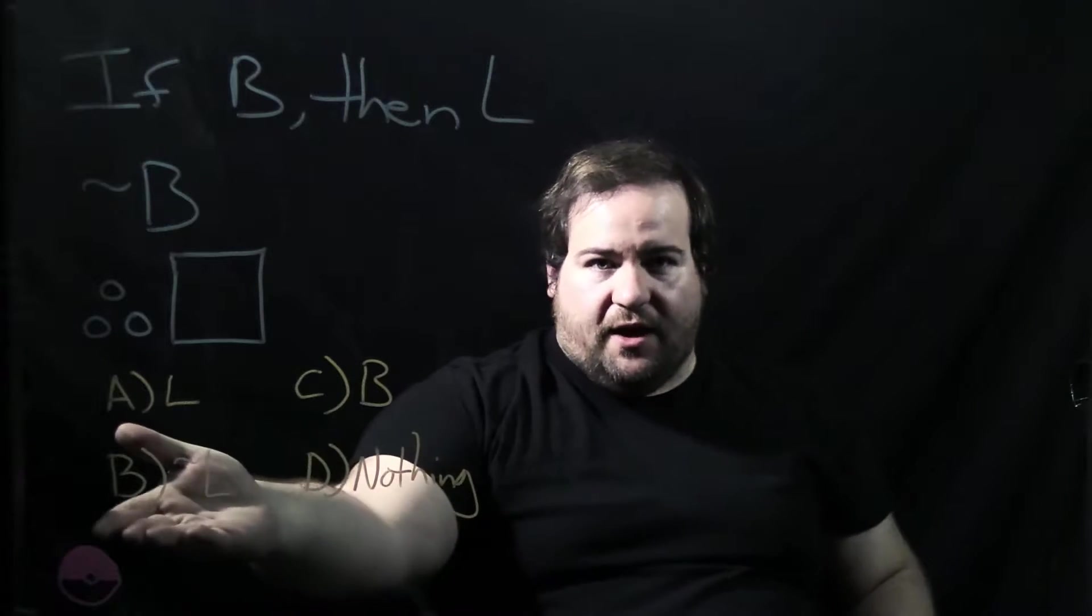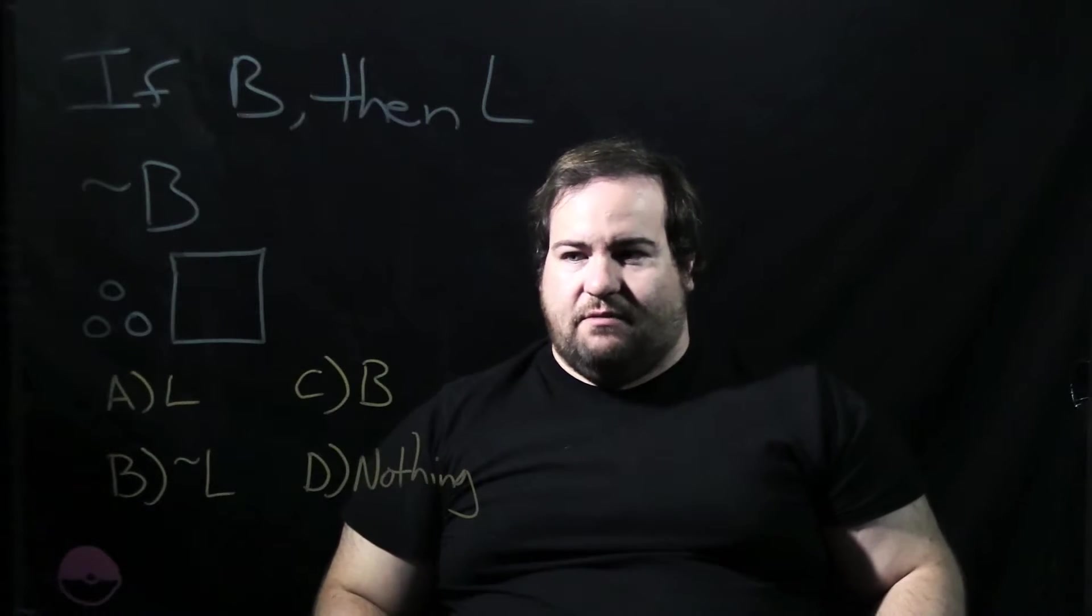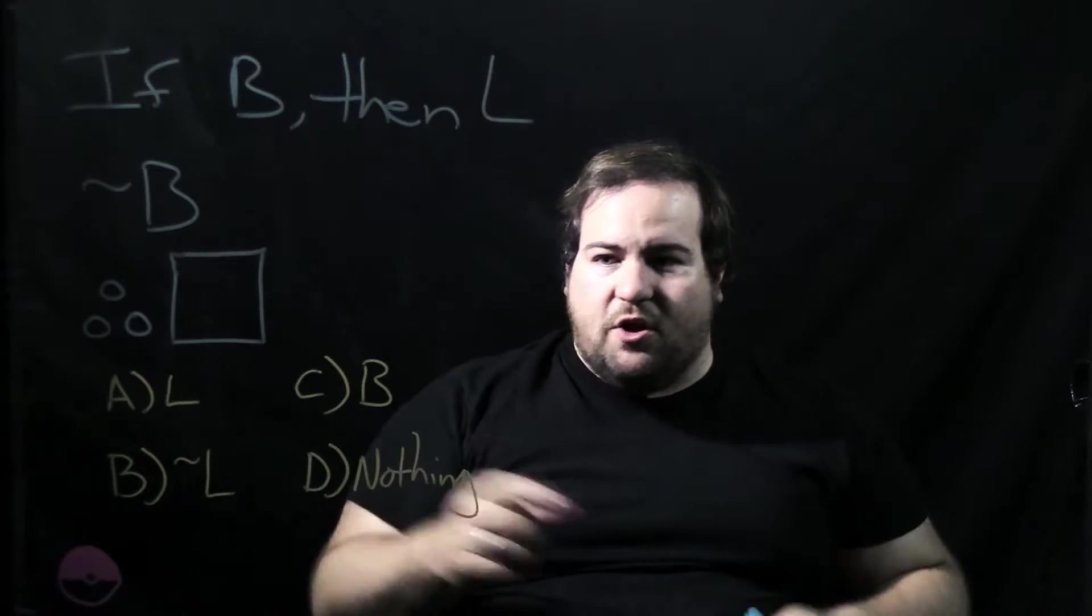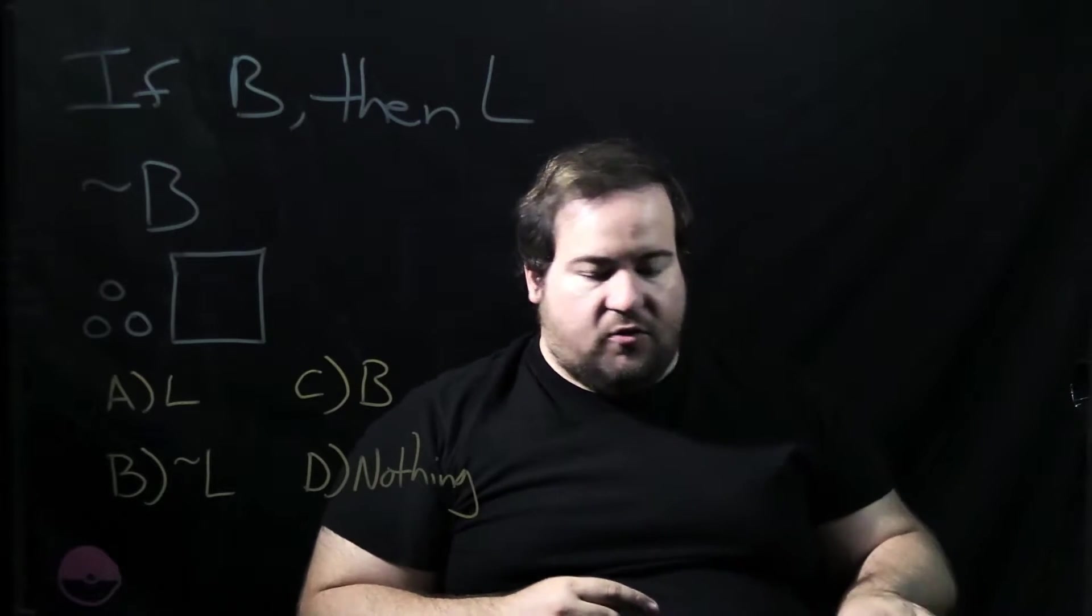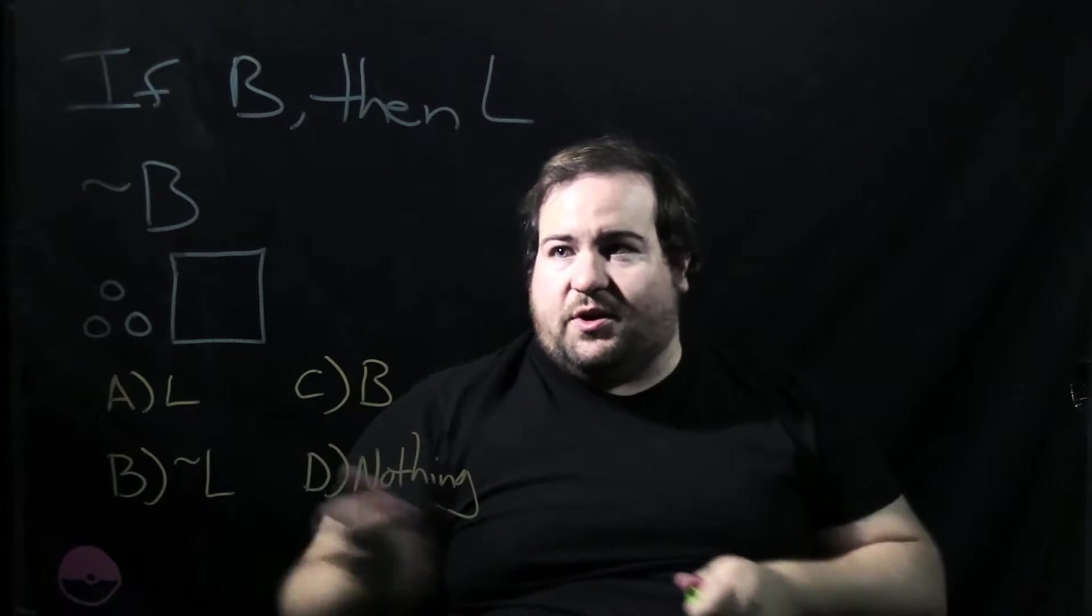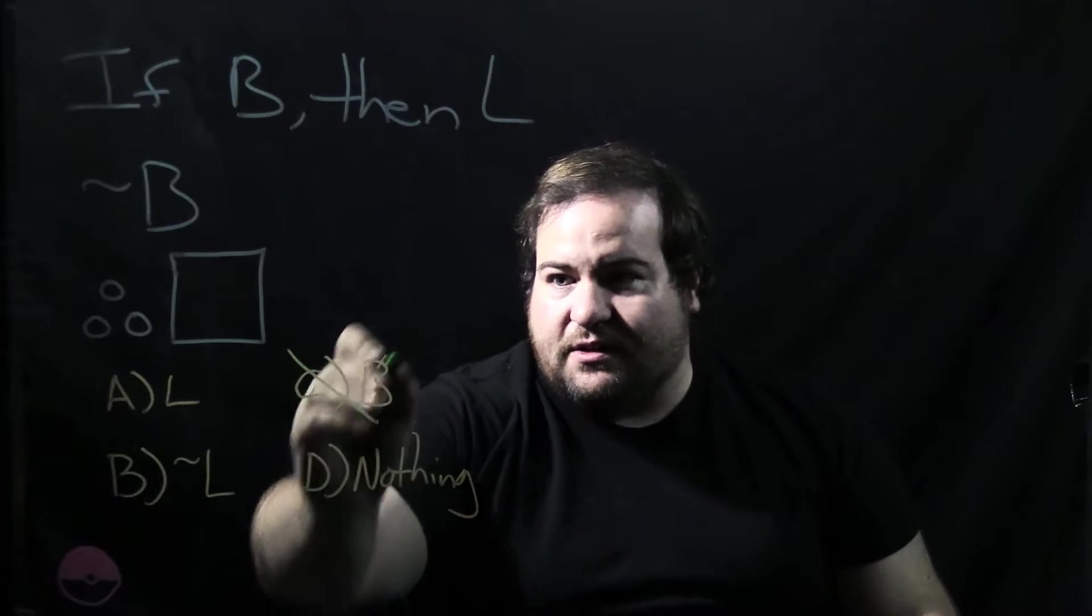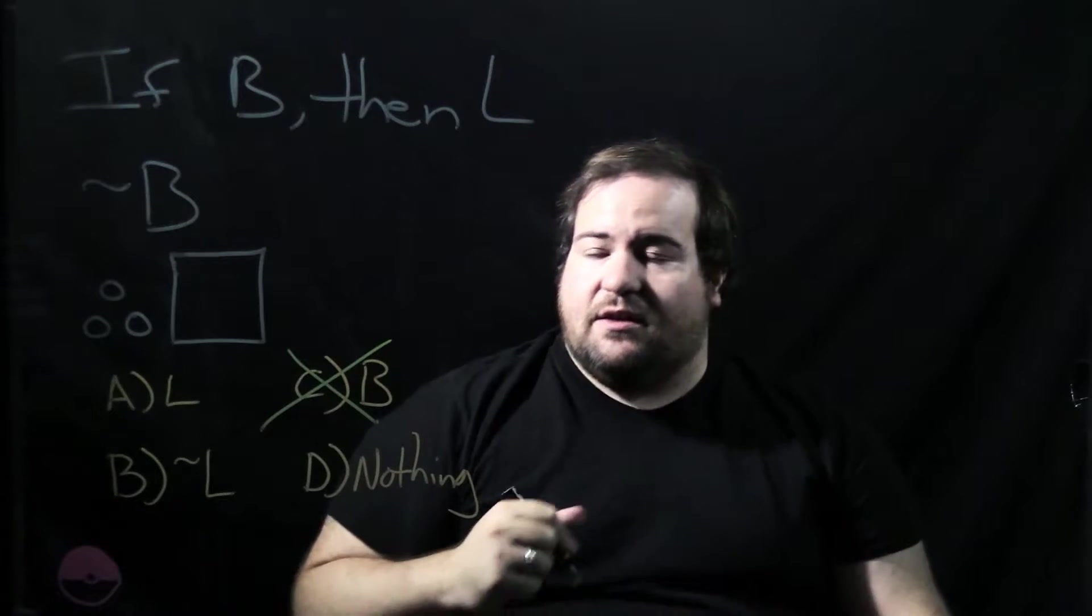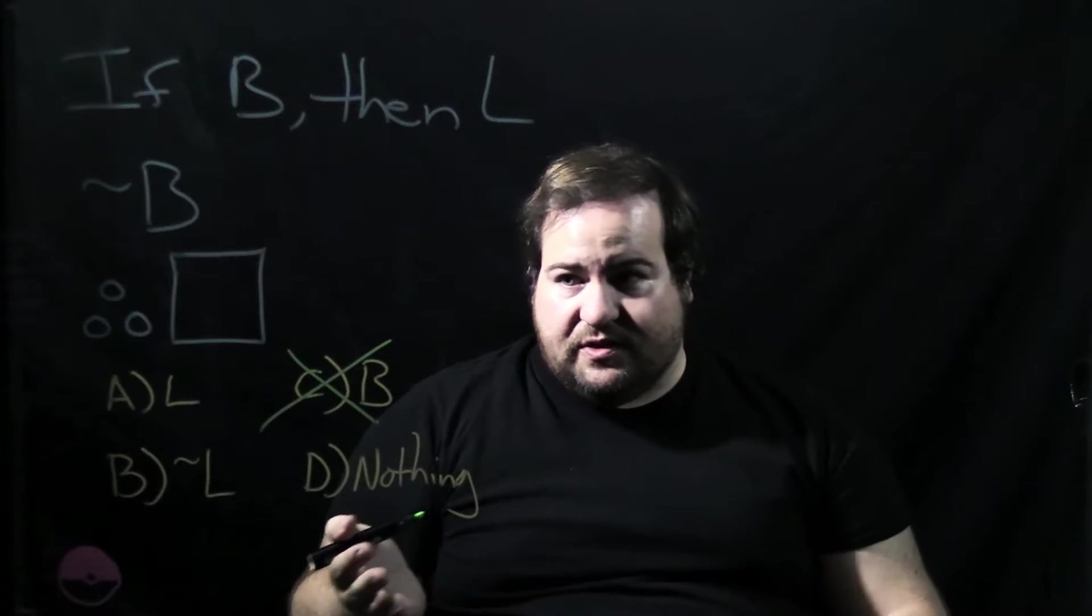Well, here we have our four lovely options again. Let's look through them. First of all, we know for a fact now that you can't conclude C. Because C is the opposite of this premise here, premise two. So, you can't conclude C.